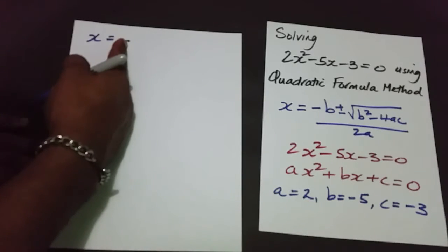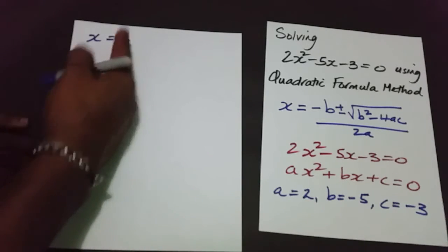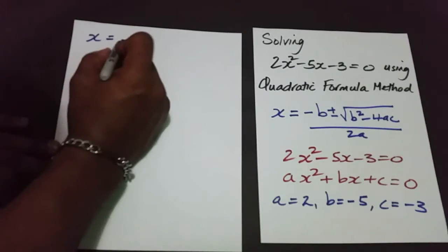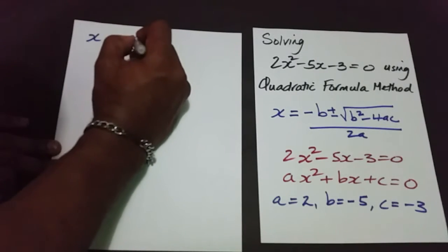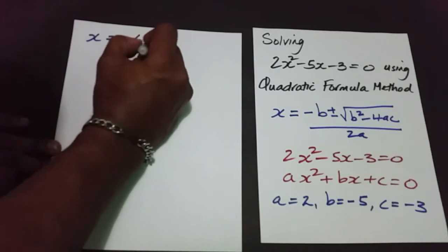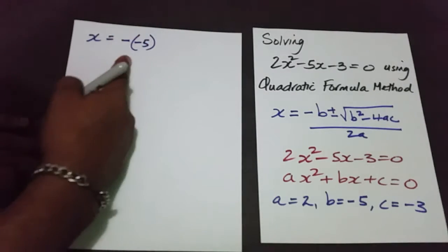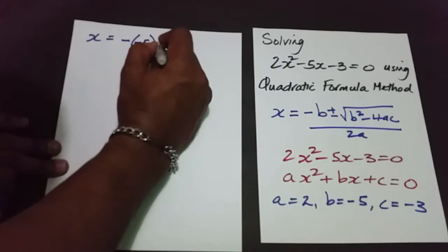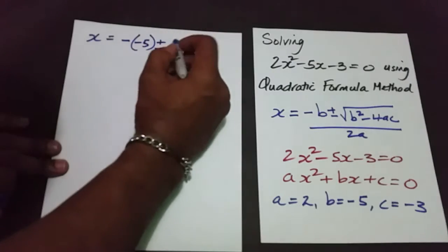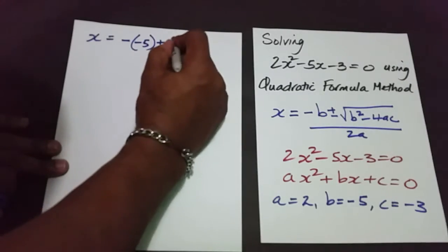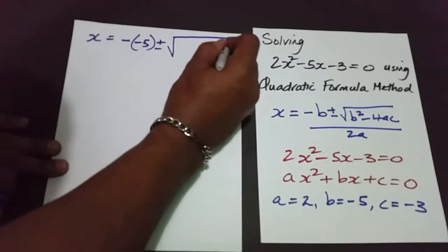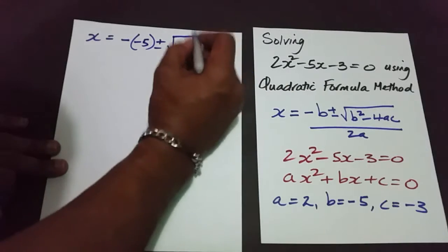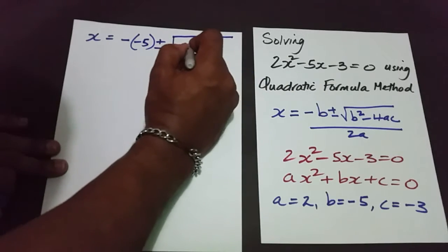So the negative of negative 5 — be very careful where that is concerned — plus or minus the square root of b squared, which is negative 5 all squared. You must include the bracket.